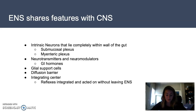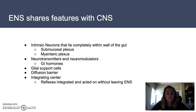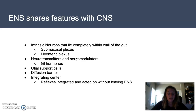There is a diffusion barrier with decreased permeability at the enteric capillaries, which is similar to the blood-brain barrier. Finally, there is an integration of reflexes and responses that all originate within the ENS and do not require any outside neural signals. Although the enteric nervous system shares many similarities with the central nervous system, it has some level of autonomy over the GI tract.